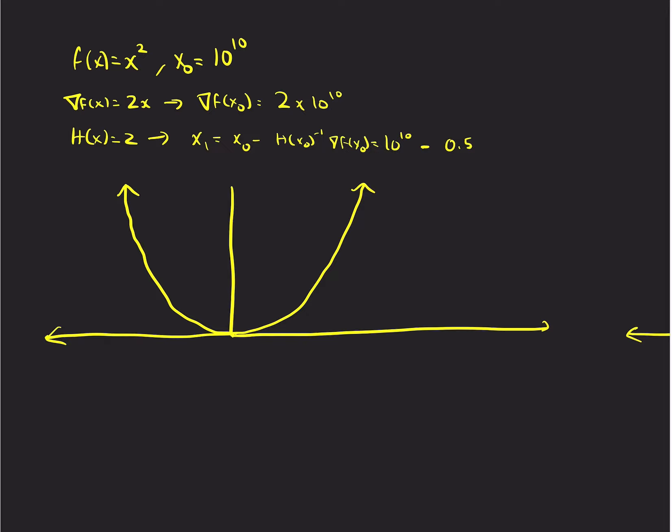But the idea here is that if we just plug in these equations, and we know this is quadratic, right? So it should, it'll actually converge in one iteration. So the idea here is that the gradient of f at this point is 2 times 10 to the 10th. So it's a massive gradient.